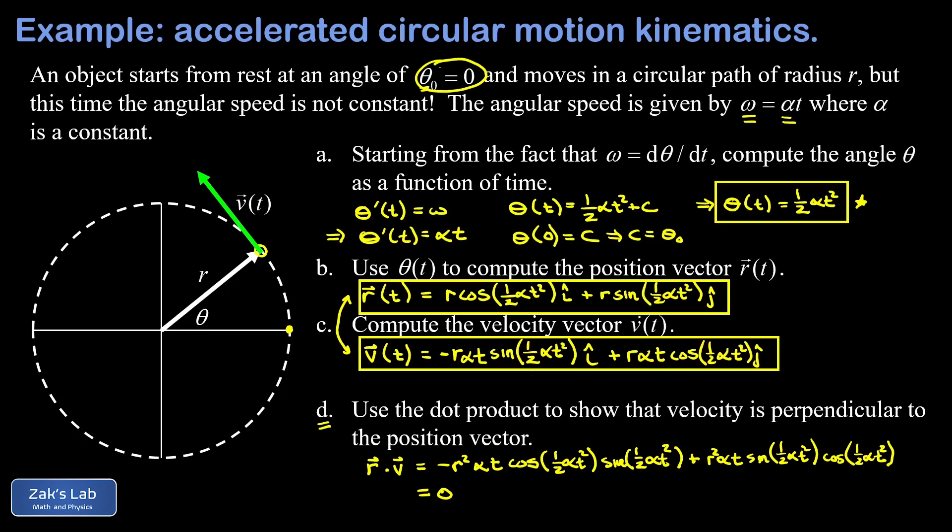What it doesn't share in common with uniform circular motion is that the acceleration vector for this thing is no longer going to point to the center of curvature. There's going to be a component of the acceleration in the tangential direction, and that causes the object to speed up as it's moving on this circular path. So this was a recent test question, and I felt like it was already complicated enough.